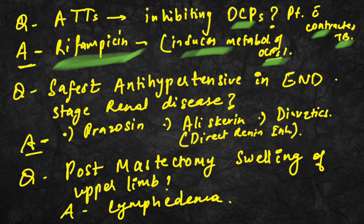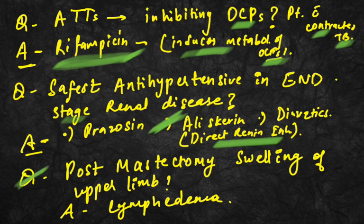The safest antihypertensive in end-stage renal disease is aliskiren, which is a direct renin inhibitor — that is the answer. For post-mastectomy swelling of the upper limb, it is a simple question and the answer is lymphedema.